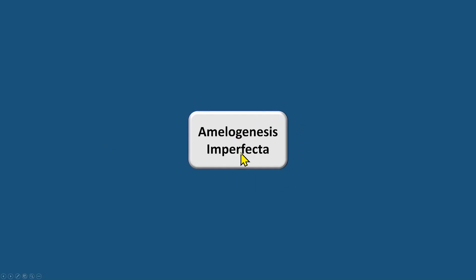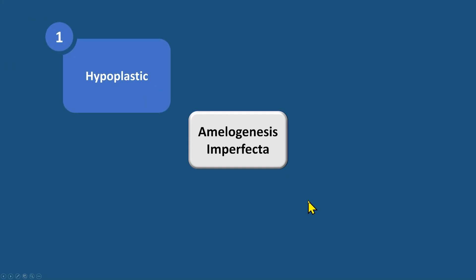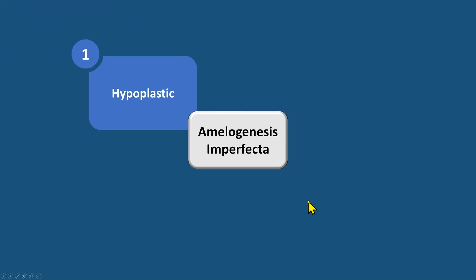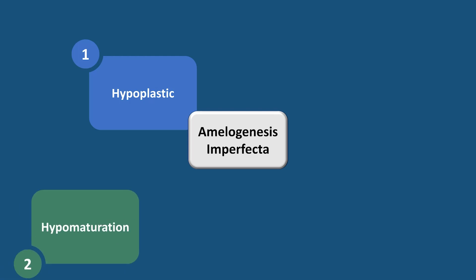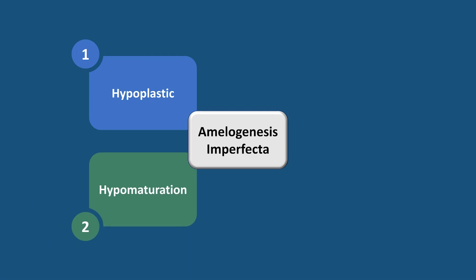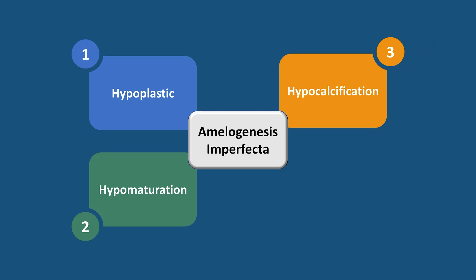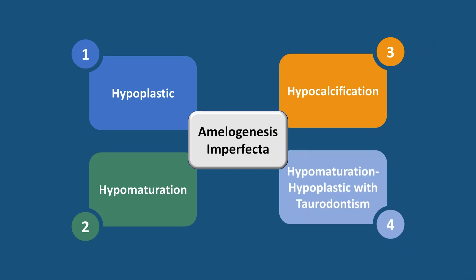Amelogenesis imperfecta can be of four different types. The most common is the hypoplastic type. The second type is hypomaturation. The third is hypocalcification. The fourth, and less common, is hypomaturation-hypoplastic with taurodontism.